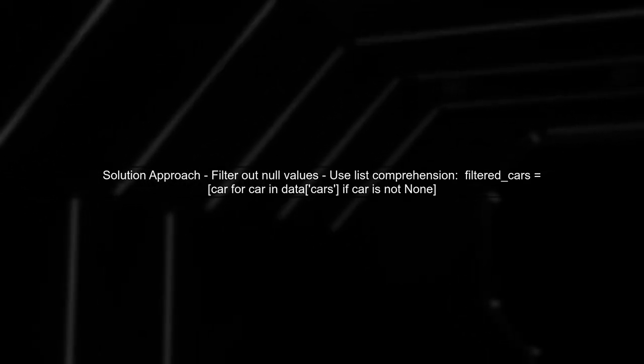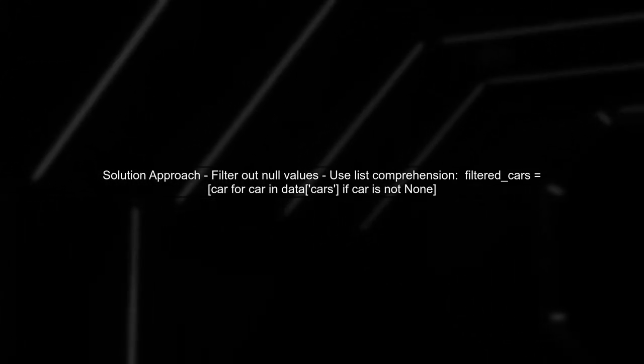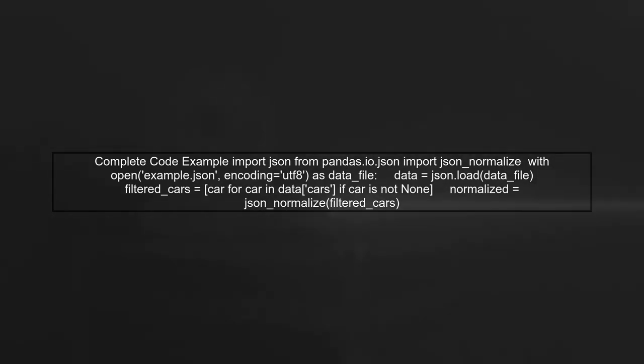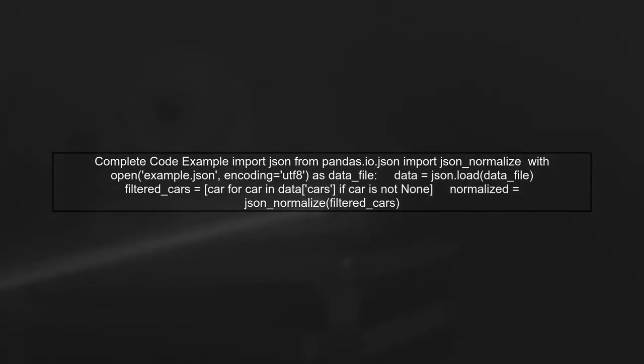To handle null values, we can preprocess the data before normalization. One approach is to filter out any null entries from the list of cars. After filtering, we can safely normalize the data without encountering errors. By following this method, we can effectively handle null values in our JSON data and successfully convert it into a pandas DataFrame.